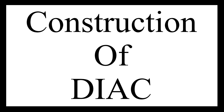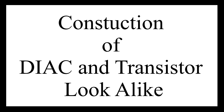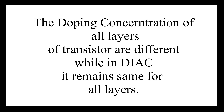Let's begin with the construction of DIAC. The construction of DIAC looks like a transistor; however, there are several differences between these two. The doping concentration in all the layers in DIAC are identical, whereas the transistor has a highly doped emitter, lightly doped collector, and moderately doped base.